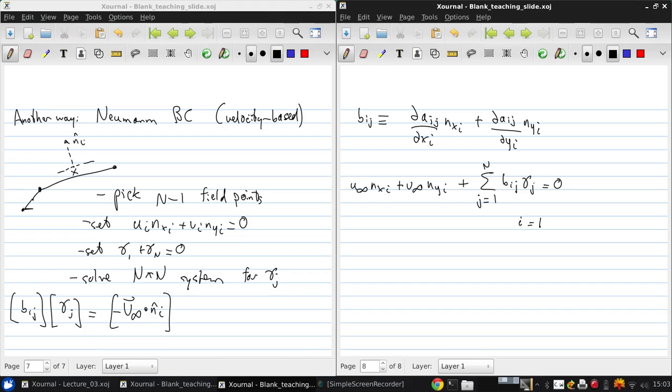This is just an equivalent way of writing that matrix expression, where i goes from 1 to n-1. And we combine that with gamma_1 + gamma_n = 0, which is the Kutta condition.